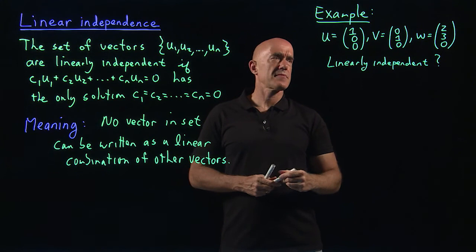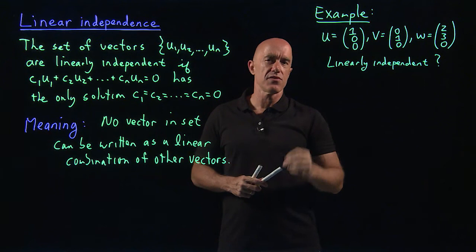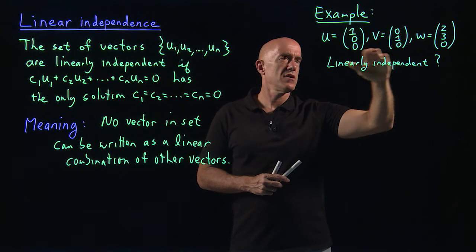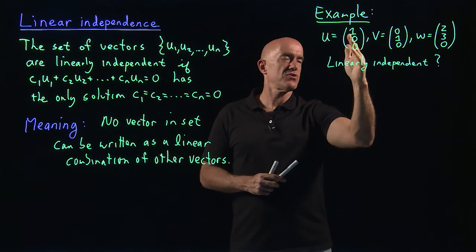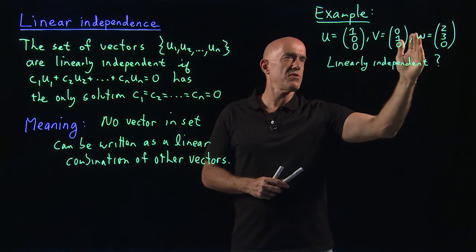The idea that you should ask yourself then is can you write one of these vectors as a linear combination of the other two vectors? And you should see that W and U and V, they all have 0 in the third row. And W looks like it's 2 in the first row. U has 1 in the first row. And 3 in the second row. And V has 1 in the second row.